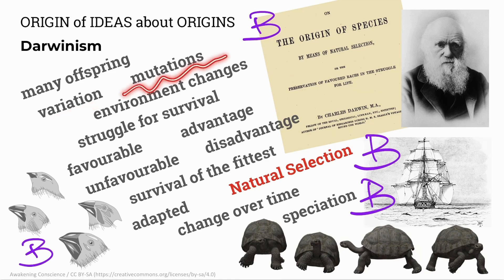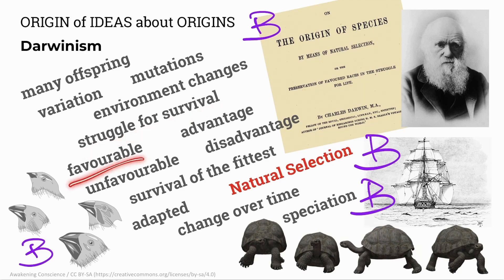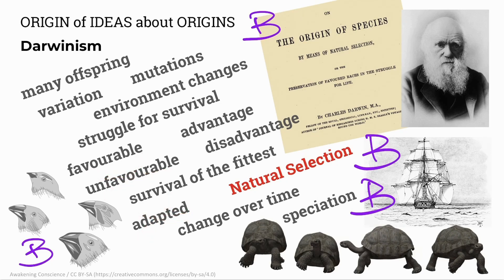Most variation is caused by random mutations. There are changes in the environment — for example, increase in predation, lack of food, disease, lack of shelter, or shortage of mates. These changes lead to a struggle for survival. Those individuals with favourable characteristics have an advantage, while individuals with unfavourable characteristics are at a disadvantage. The best adapted individuals survive, and this is known as survival of the fittest. Darwin explained evolution in terms of this mechanism called natural selection, where the environment determines which individuals are better adapted and which are not.